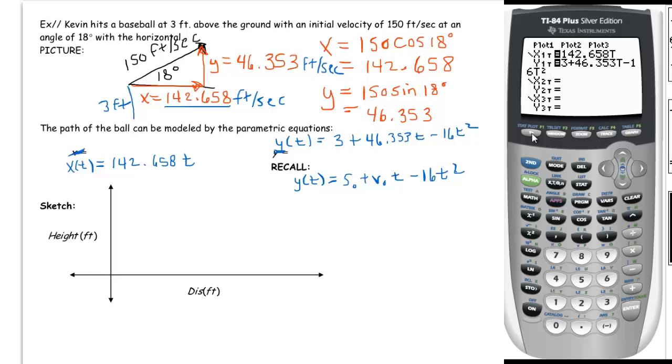Now in y equals you'll see I have x1 as 142.658 t and in y1 I have 3 plus 46.353 t minus 16 t squared. A couple things to keep in mind are mistakes that a lot of students make: they forget the t's, so make sure you don't forget the t's, and make sure you're in degree mode.